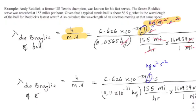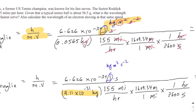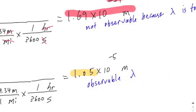The question also asks us to calculate the wavelength of an electron moving at that same speed. The only difference is that the electron has a much smaller mass compared to the tennis ball — 9.11 times 10 to the minus 31 kilograms. Everything else in the denominator stays the same. What we get is 1.05 times 10 to the minus 5 meters.